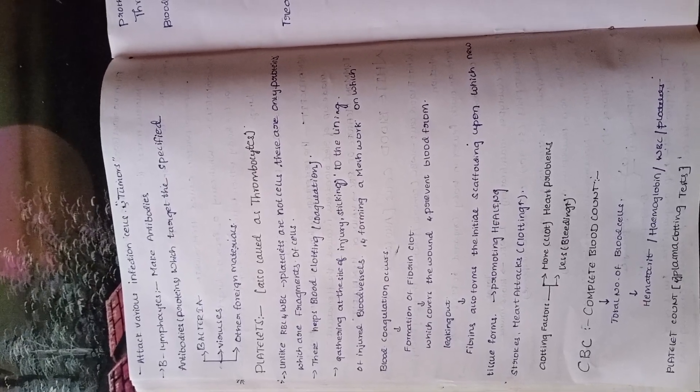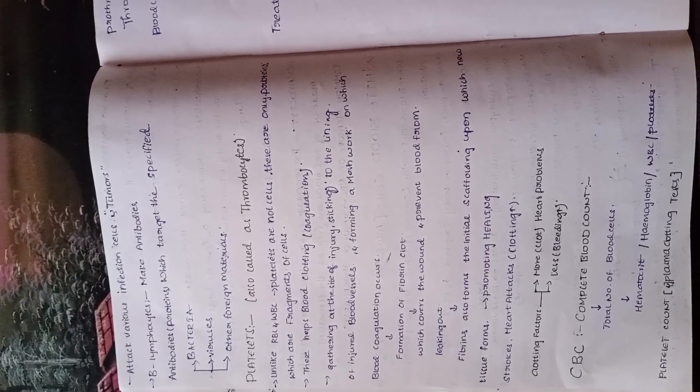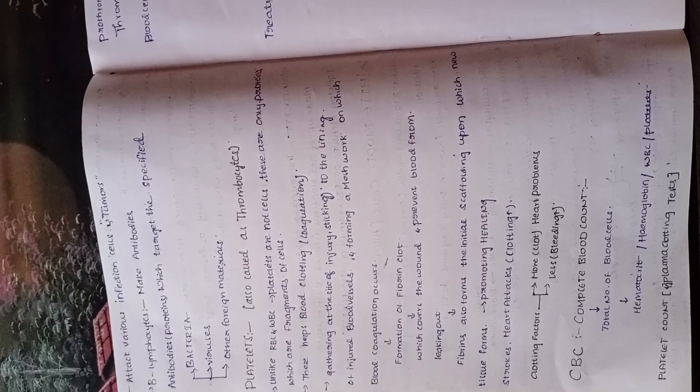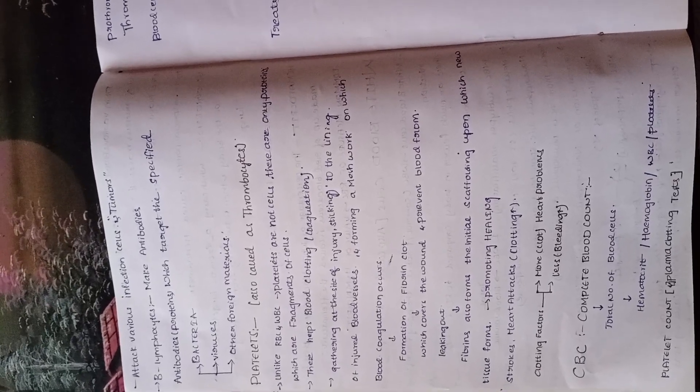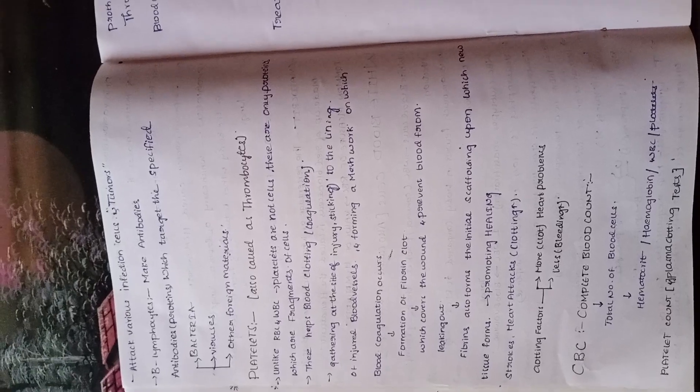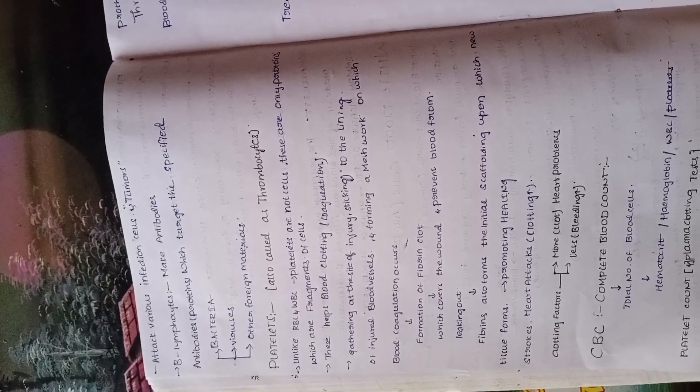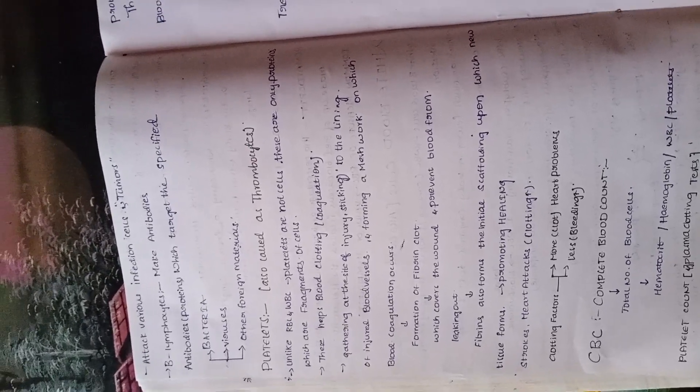The CBC test — complete blood count — measures the total number of blood cells including RBC, WBC, platelets, and plasma. Related clotting tests include prothrombin time and partial thromboplastin time.